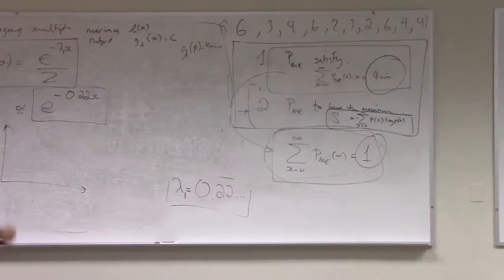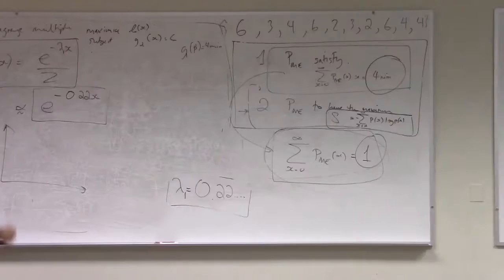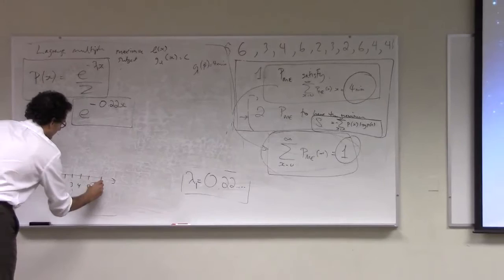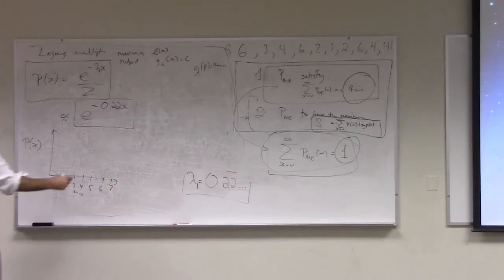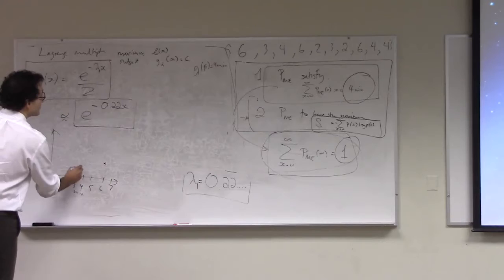So, at the end of all of this, if this is 0 minutes, 1, 2, 3, 4, 5, 6, 7, this is your waiting time in minutes, this is the probability of waiting that long. So in the data, we had, sometimes you waited 6 minutes, sometimes you waited 3 minutes, sometimes you waited 4 minutes, or a couple of times you waited 2.